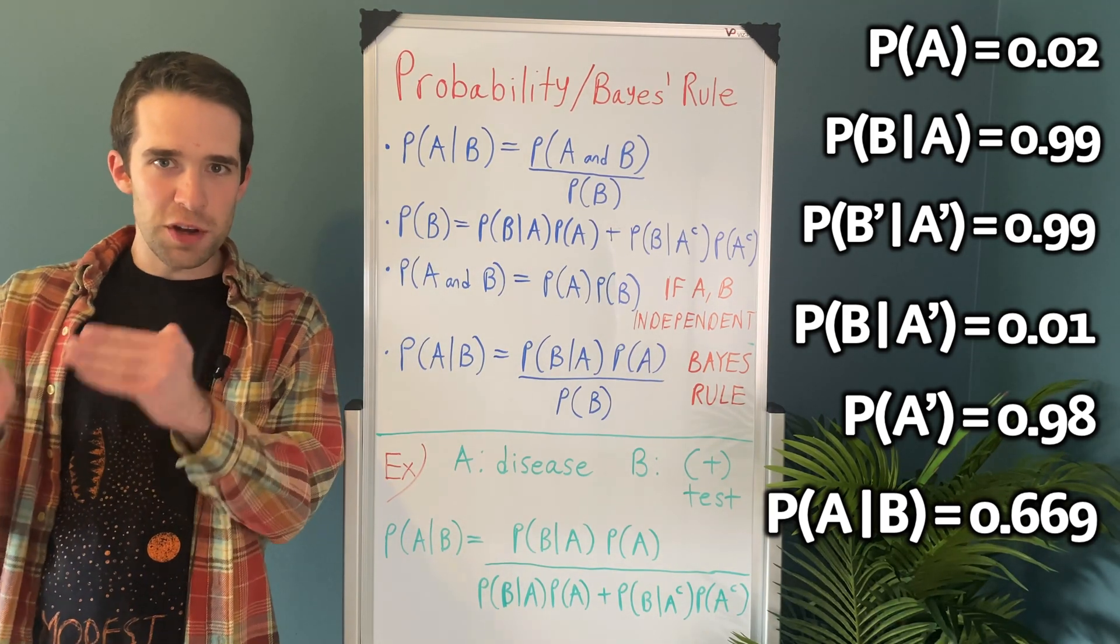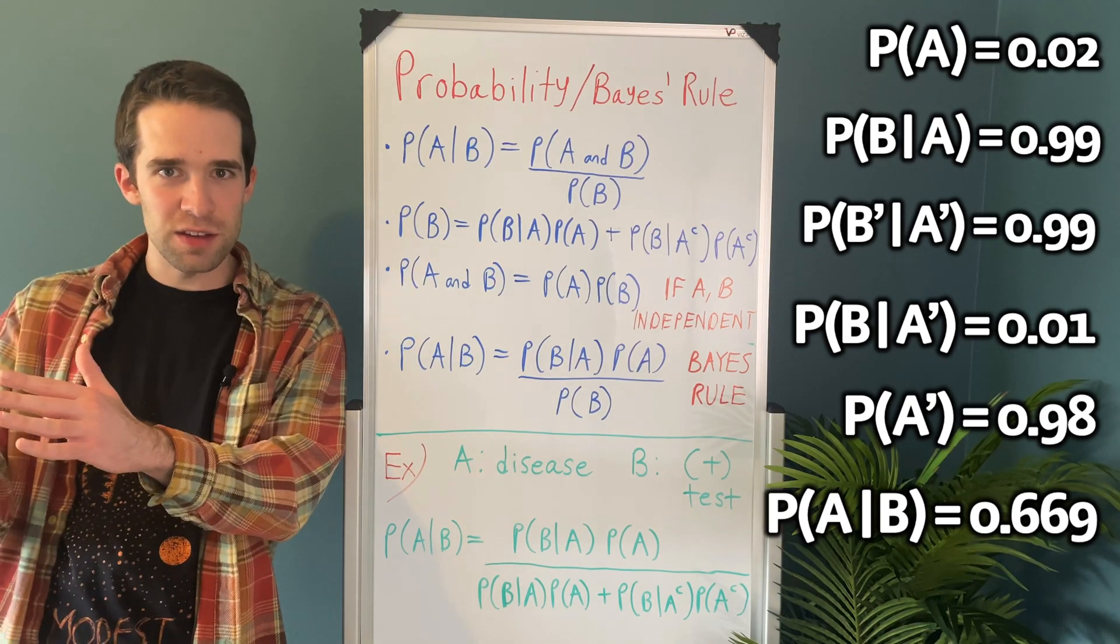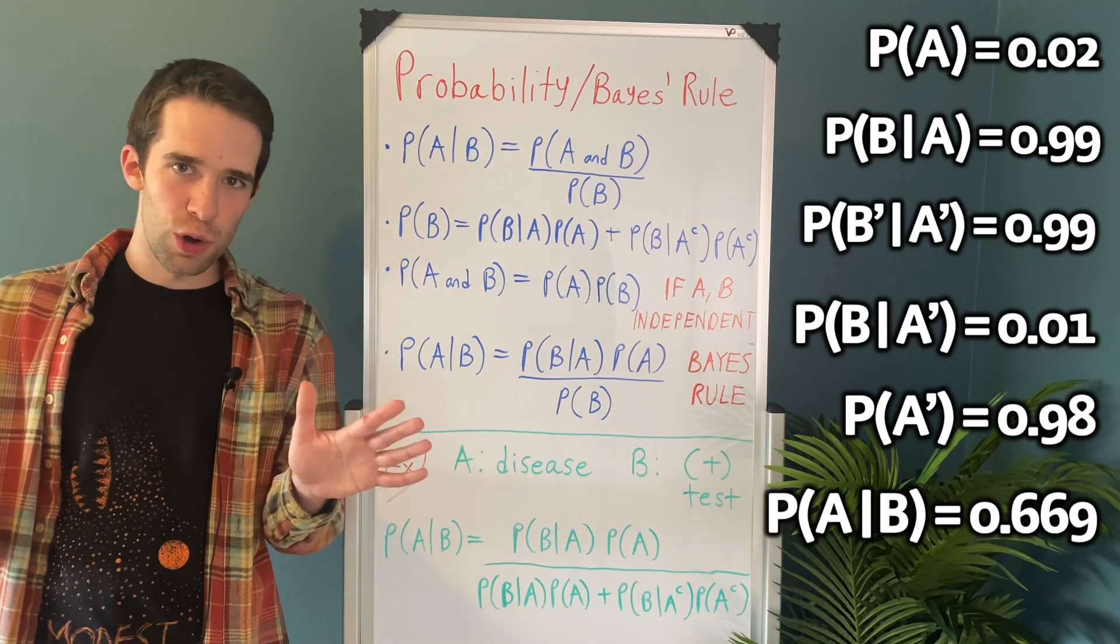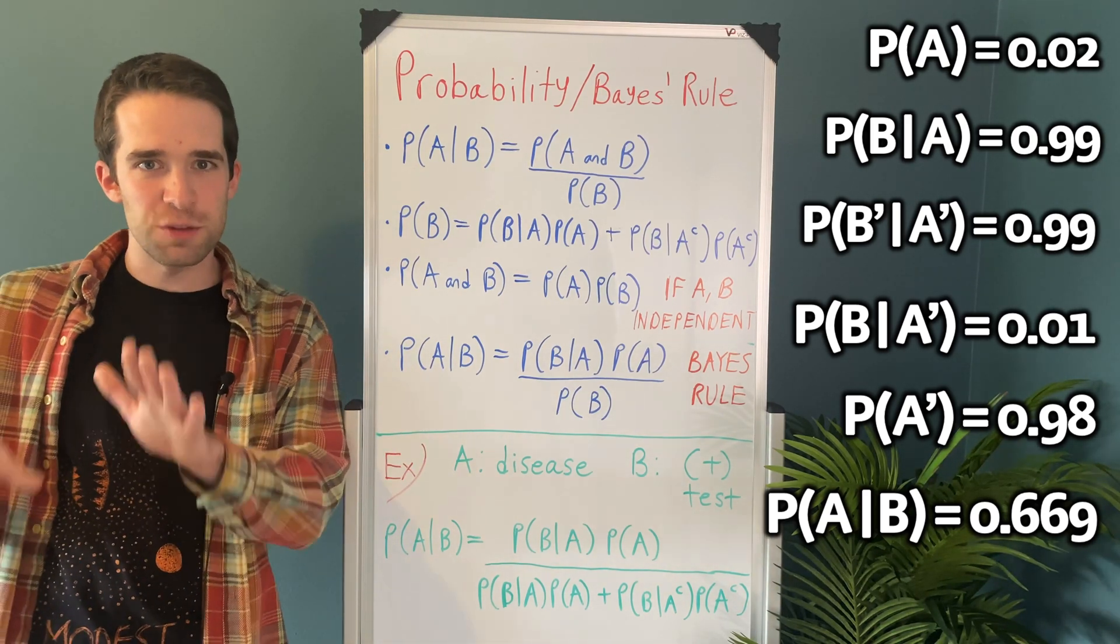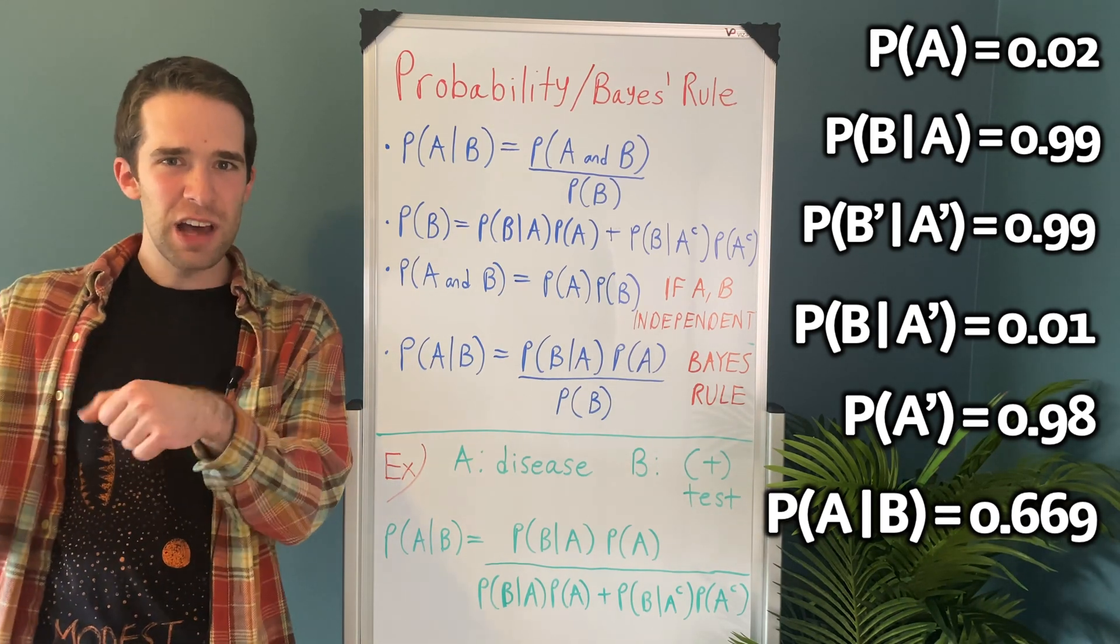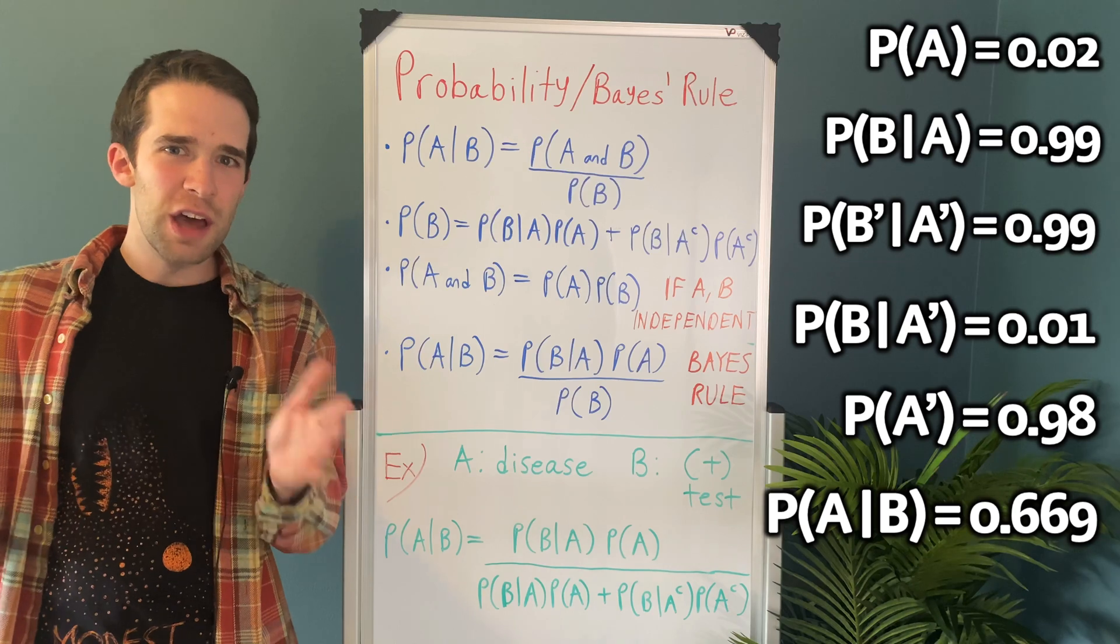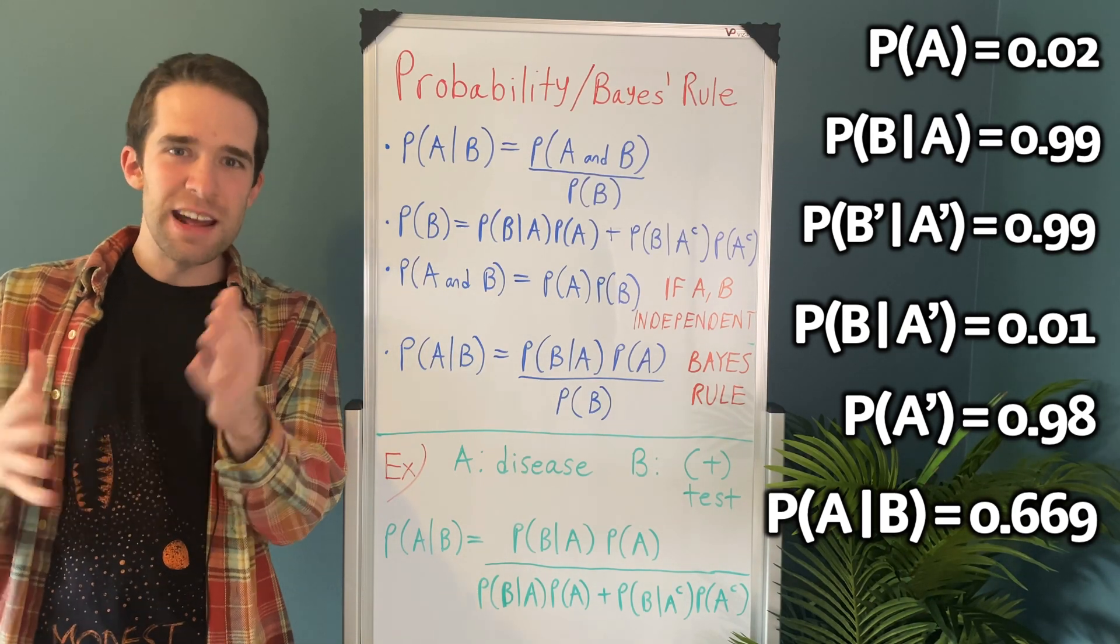This phenomenon is going to be true regardless of how sensitive and how specific your test is. It's because in the real world, there's no such thing as a 100% sensitive and 100% specific test. And when we have a rare event like this, like in our hypothetical example, this disease only affects 2% of the population. It's pretty rare.